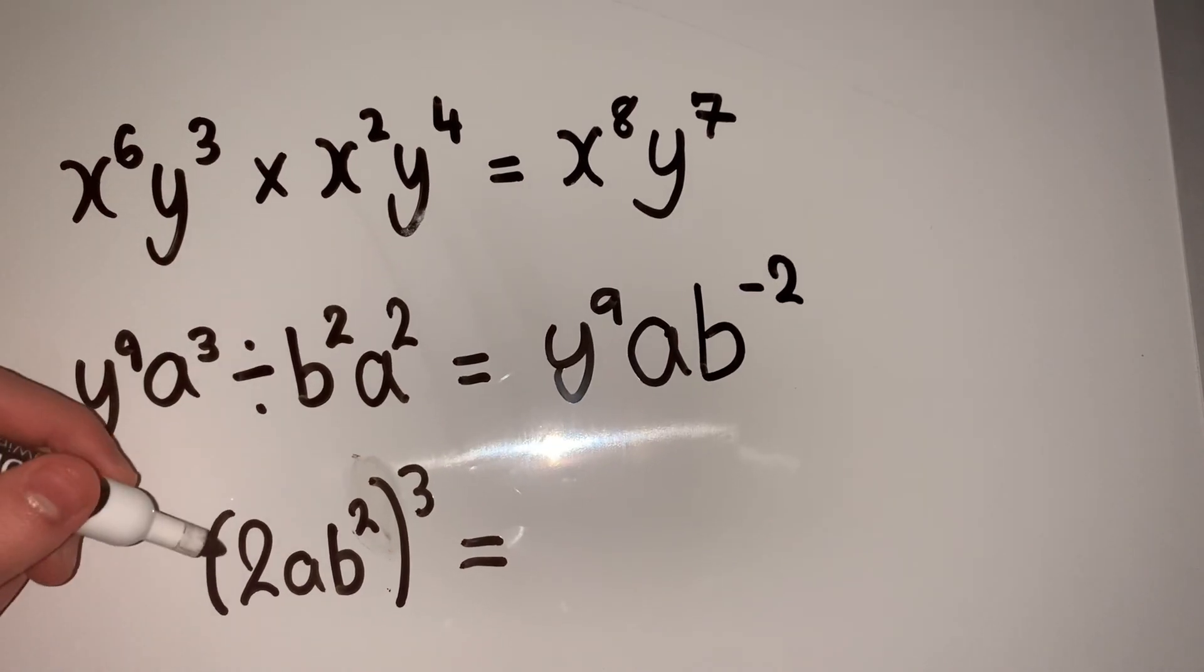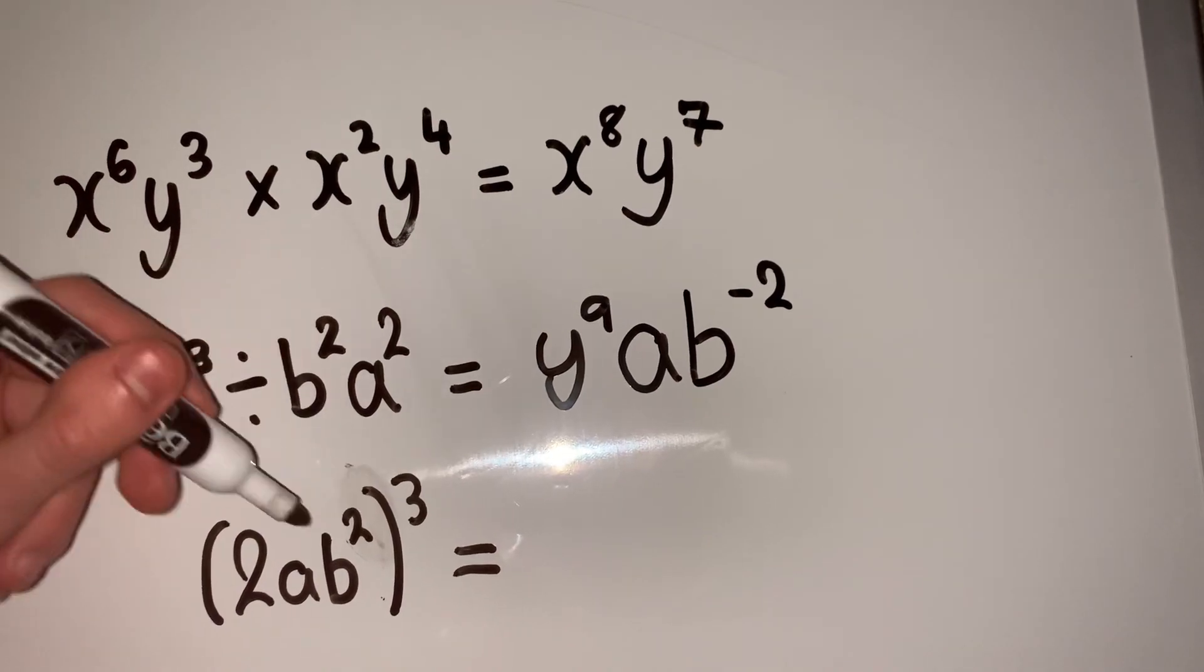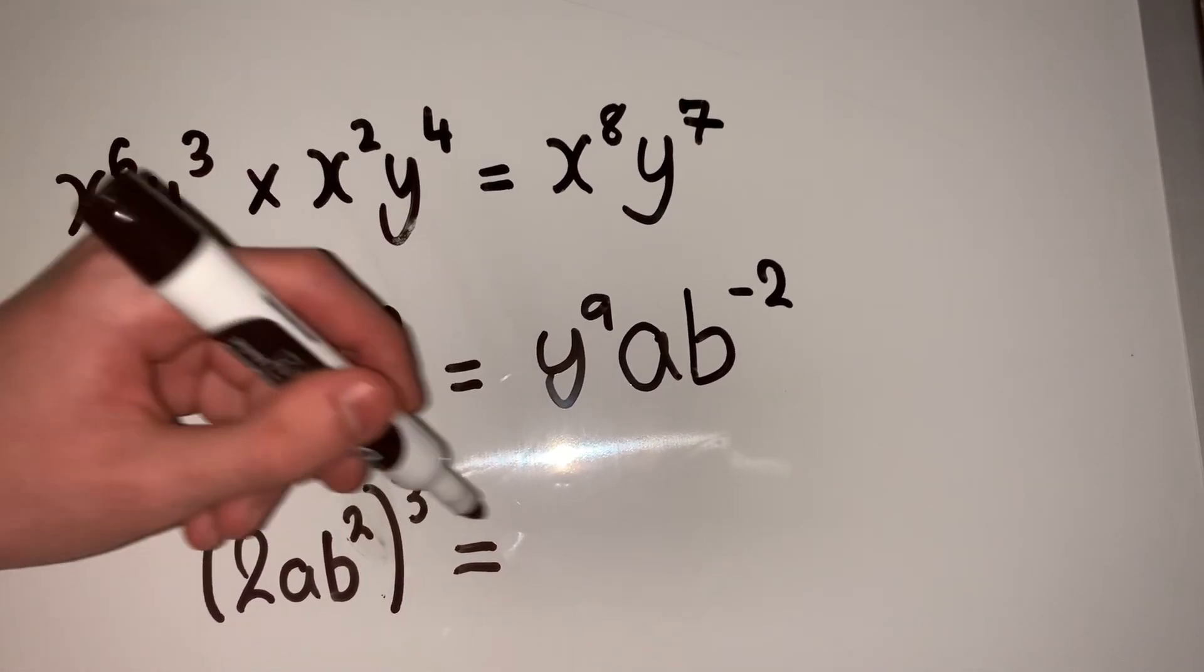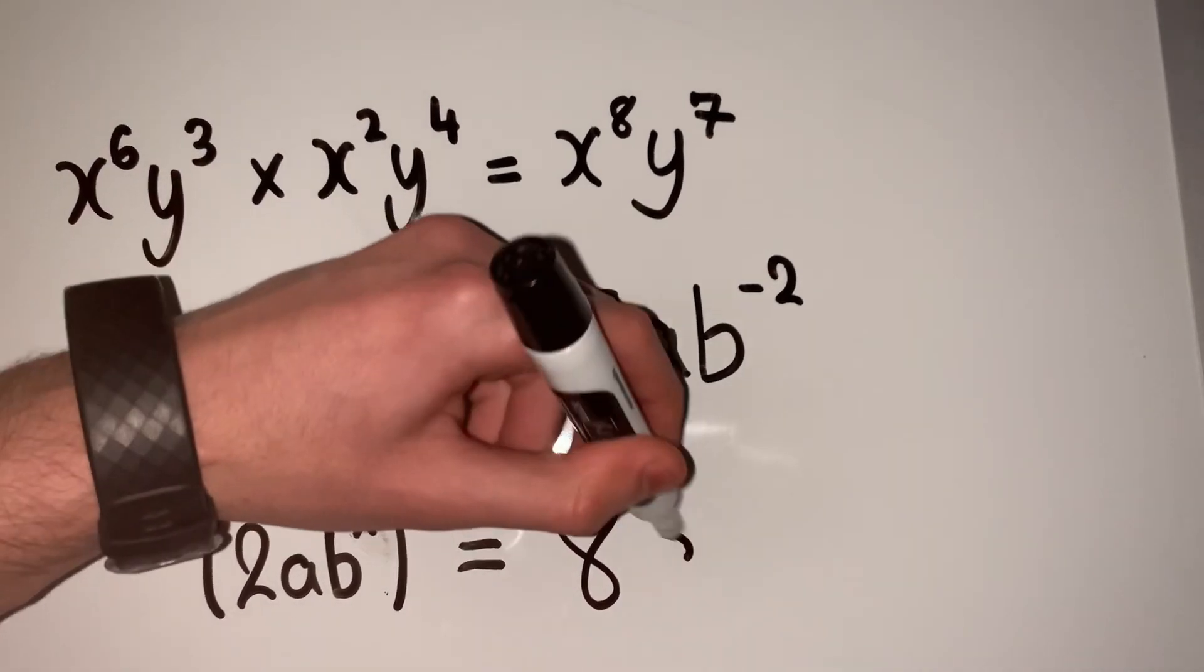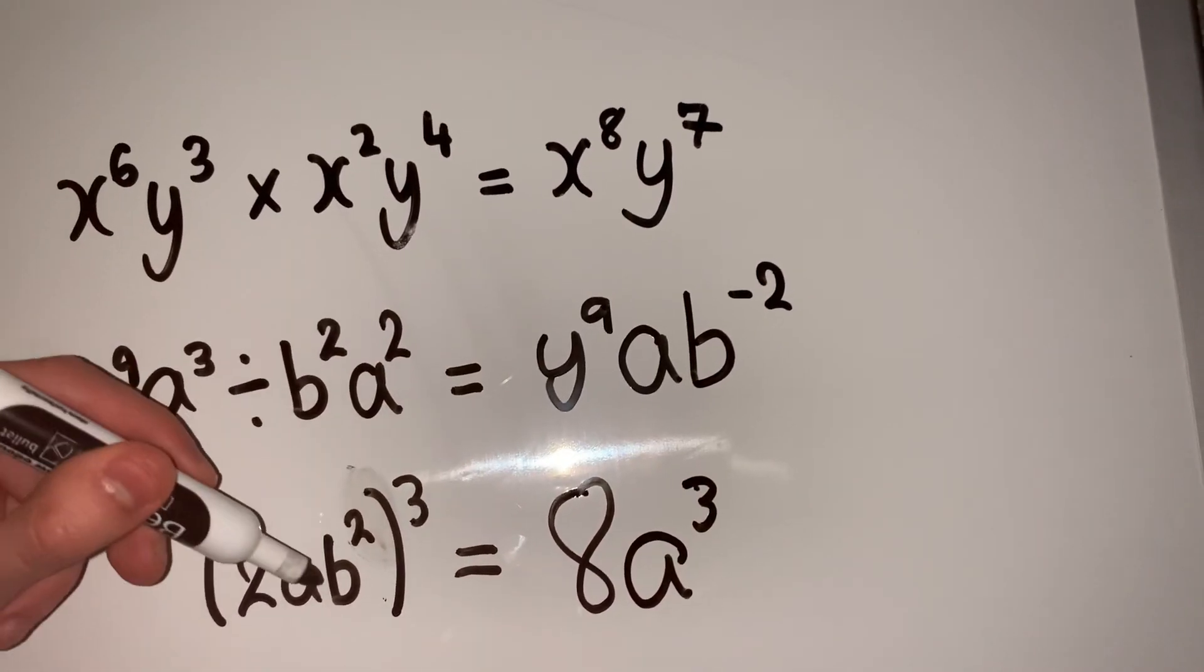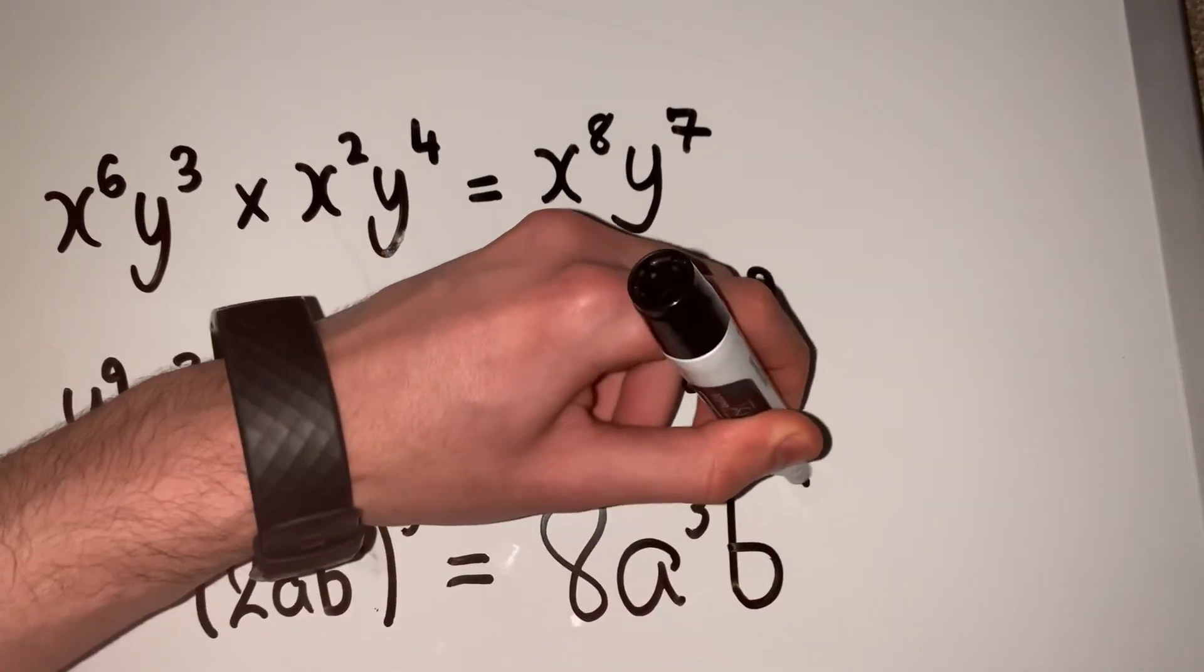For this third one, remember when raising an expression to another power, we multiply out the powers. We have 2^3, which is 8, then a^(3×1) equals a^3, and b^2 to the power of 3 is 2 times 3, giving us b^6.